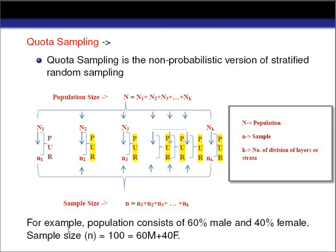The sample size is 100 and the population consists of 60% male and 40% female. Therefore, we will collect data from 60 males and 40 females, which sums to 100. This way our sample also consists of 60% male and 40% female, just like the population, to make our results representative.